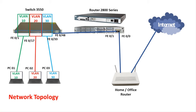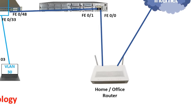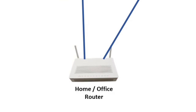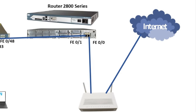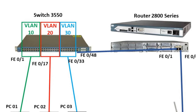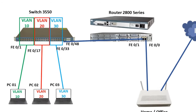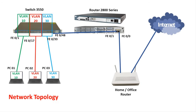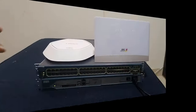This is my network topology diagram. I have a home router from the ISP service provider, a Cisco 2800 series router, and a 3550 series switch — pretty old but it will work. I'm going to connect my ISP router LAN port to my Cisco 2800 router's Fast Ethernet 0/0 port. Fast Ethernet 0/1 from the router will connect to the Cisco 3550 switch's Fast Ethernet 0/48 port. I will create VLANs 10, 20, and 30, assign ports to each VLAN, and at the end connect a laptop to each VLAN to get internet service.